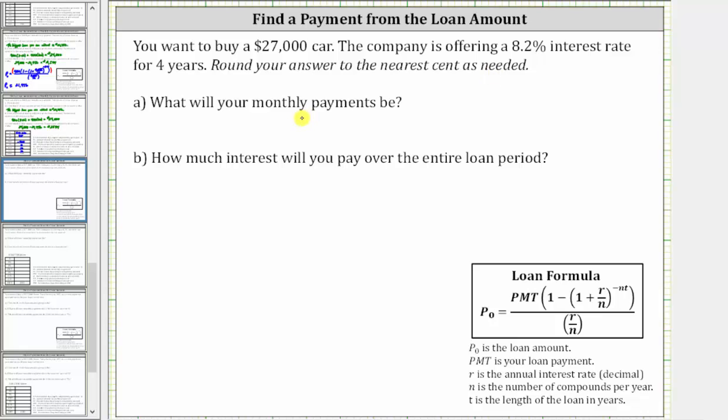To answer part A, we will use the loan formula below, where P₀ is the loan amount, PMT is the loan payment, r is the annual interest rate as a decimal, n is the number of compounds per year, which if not specifically given, n will be the number of payments per year, and t is the length of the loan in years.